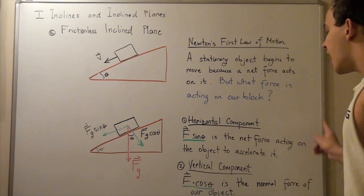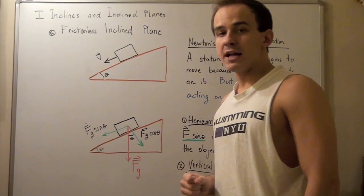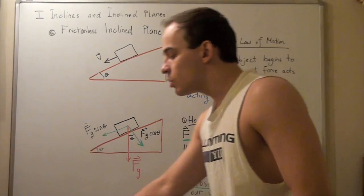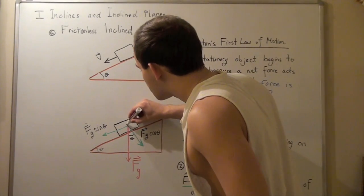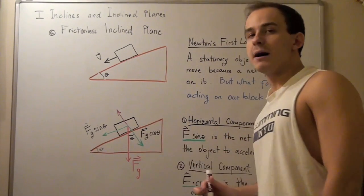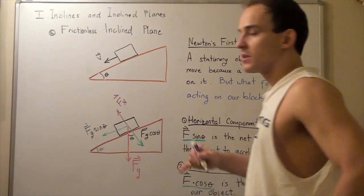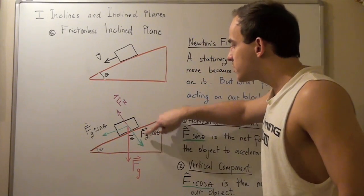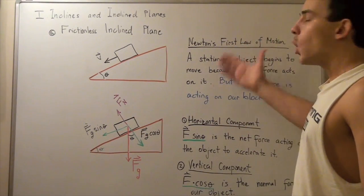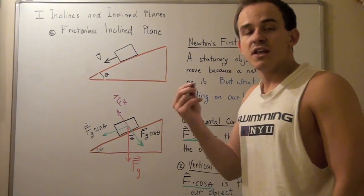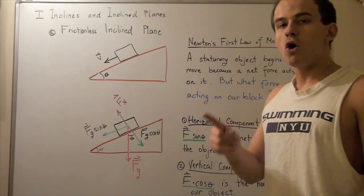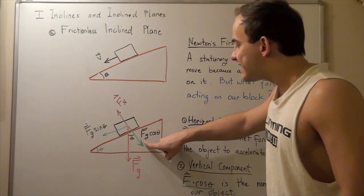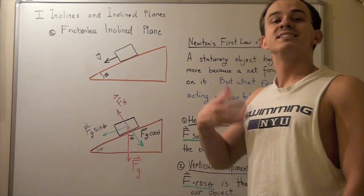Fg times sine theta is the net force acting on the object to accelerate it down the inclined plane. The vertical component, Fg times cosine theta, is simply the normal force of our object. The normal force is the force that the ground exerts on the object, pointing upward, represented as F subscript N. Since this block is not moving downward or upward perpendicular to the surface, these two forces are exactly equal — this comes from Newton's third law: for every action there is an equal and opposite reaction. So the normal force equals Fg times cosine theta.